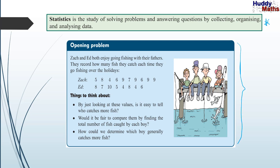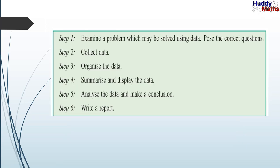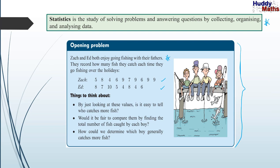Here's our opening problem. Zach and Ed both enjoy going fishing with their fathers. They record how many fish they catch each time they go fishing over the holidays. Zach went twice more than Ed. Things to think about: if you want to compare these two guys fishing, by just looking at these values, is it easy to tell who catches more fish? Would it be fair to compare them by finding the total number of fish caught? How could we determine which boy generally catches more fish? This is our opening problem, and we're going to find what statistics can do to help us answer those sorts of questions.